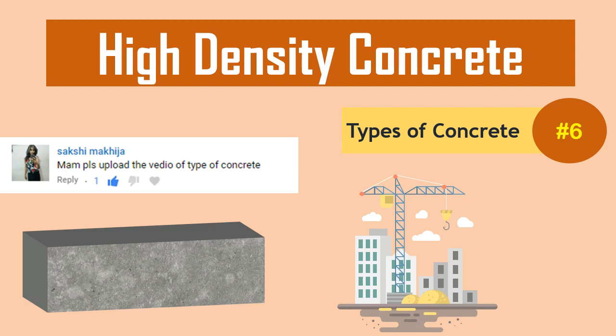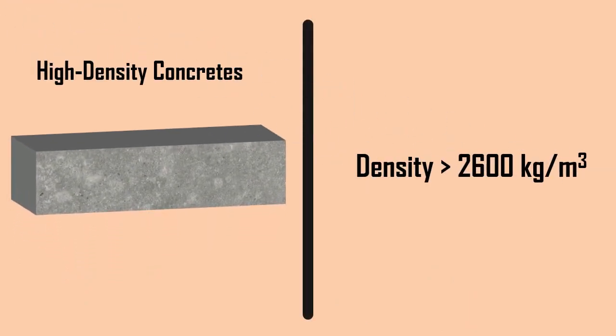High-density concrete. High-density concretes are those whose density is more than 2,600 kilograms per meter cube.